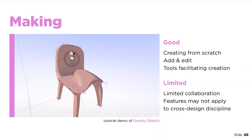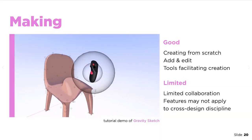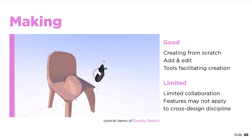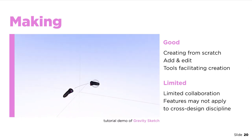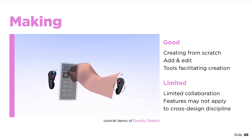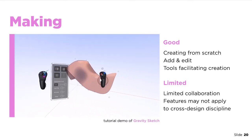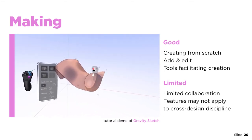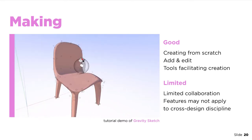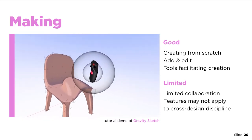In the making category, users are able to create from scratch, edit, and add to existing environments or models. This is the category that is by far the most design-aligned amongst all three. Tools within the applications are designed to facilitate creative work, such as building models from surfaces to 3D sketching.